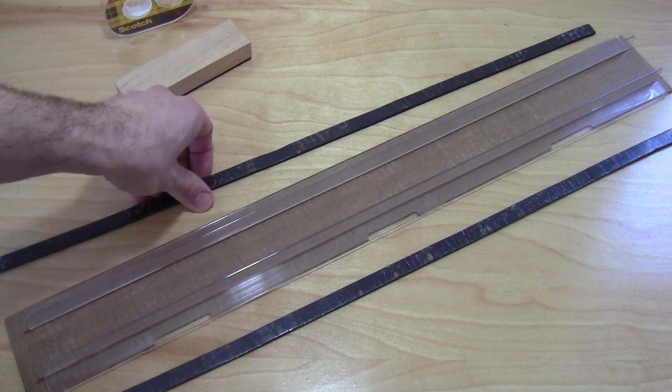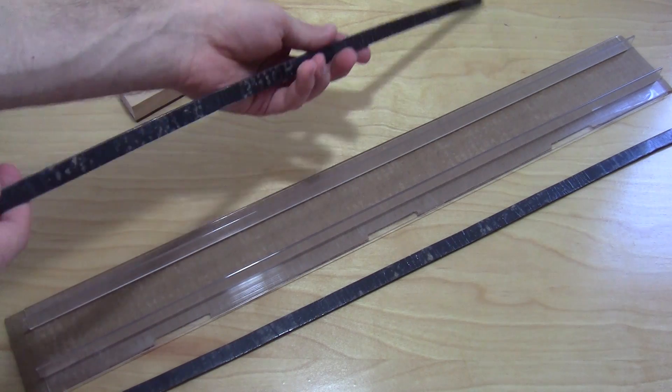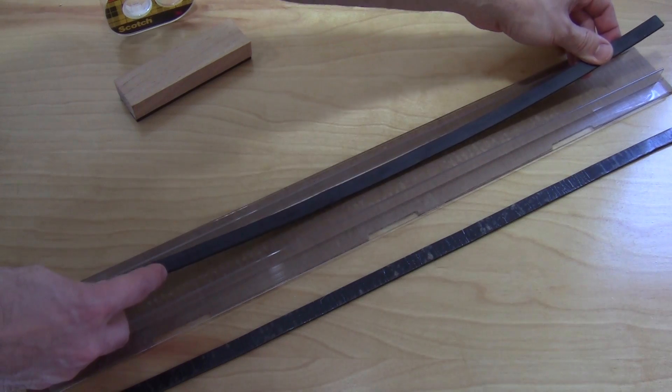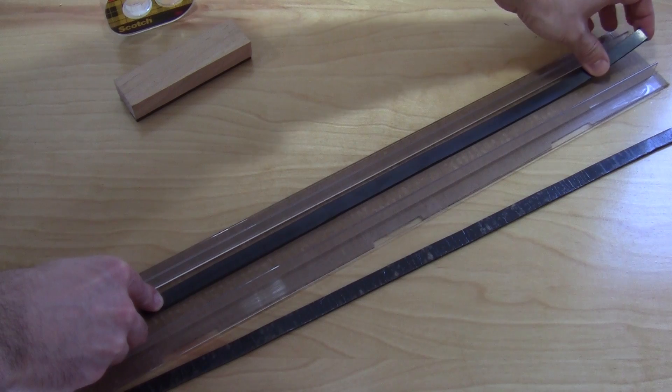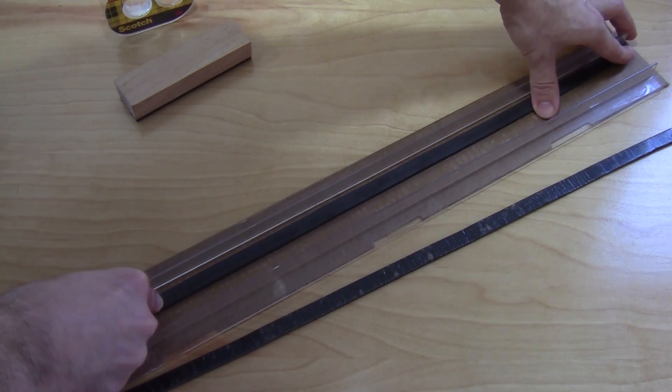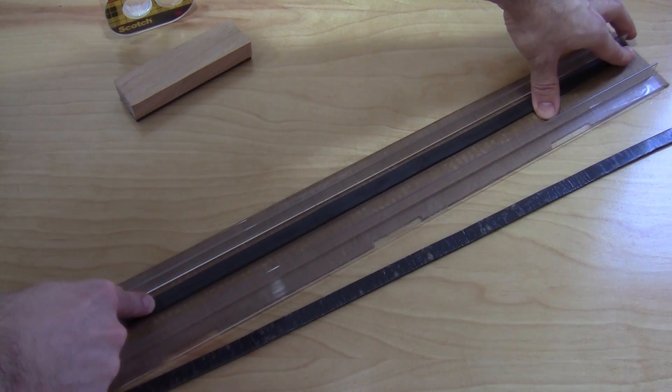Now these are a little harder to apply because they're long and rather flexible. So put one down first a couple millimeters in from the plastic angle and again if you mess up you can peel these off and reattach them.